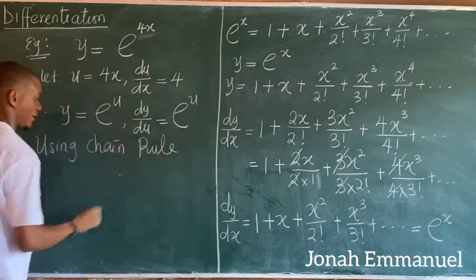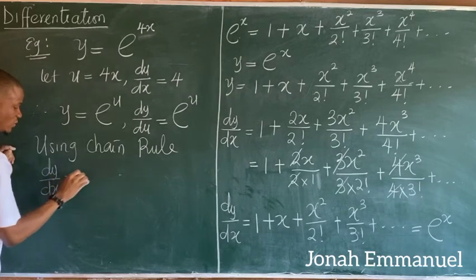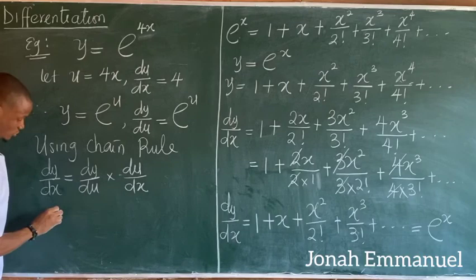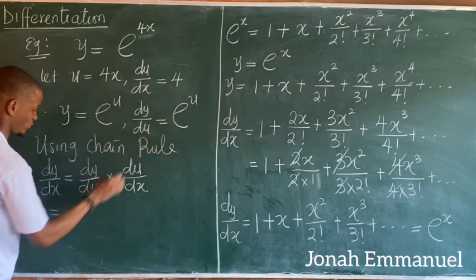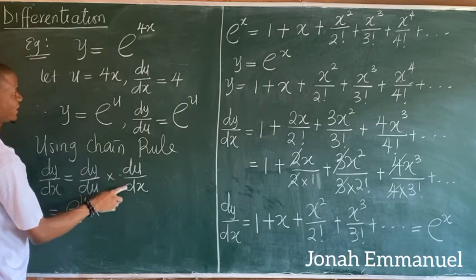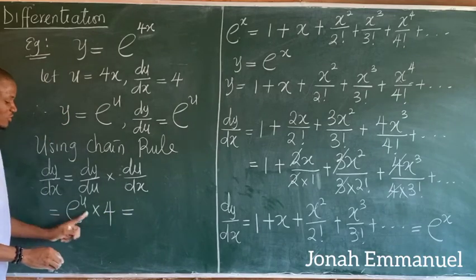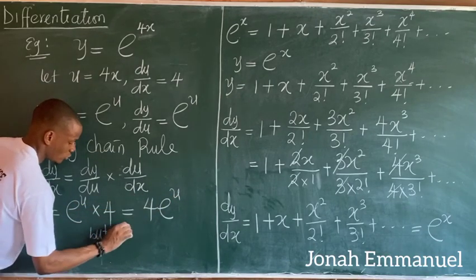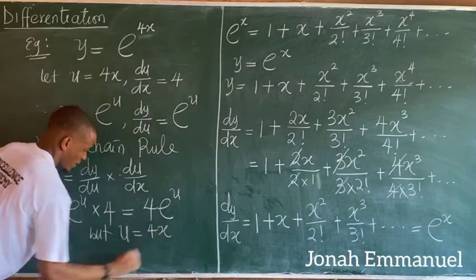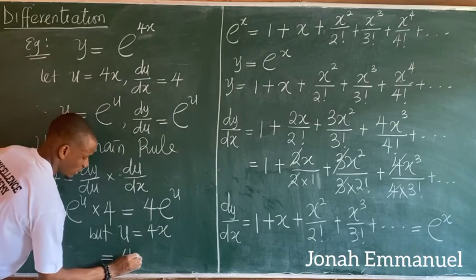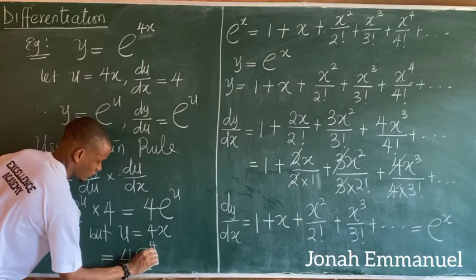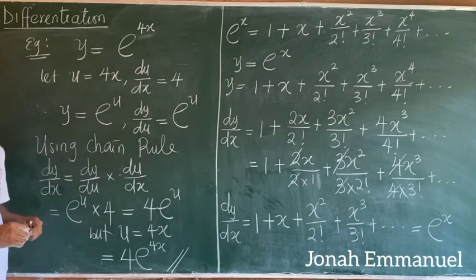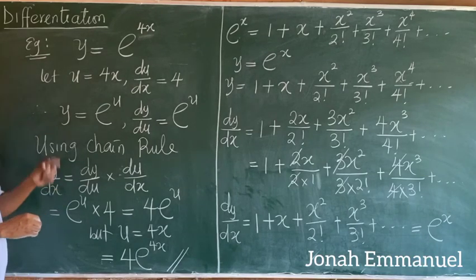Using the chain rule: dy/dx equals dy/du times du/dx. So dy/dx equals e^u times 4, which gives 4e^u. Replacing u with 4x, the final answer is dy/dx equals 4e^(4x). This is how you differentiate exponential functions.